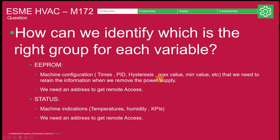How can we identify which is the right group for each variable? For the EPROM, everything related to the configuration of our machine and variables we want to be addressable — for example, variables we want to access remotely — those variables need an address. And for the status, everything related to indicators: for example, temperature, humidity, or KPIs.